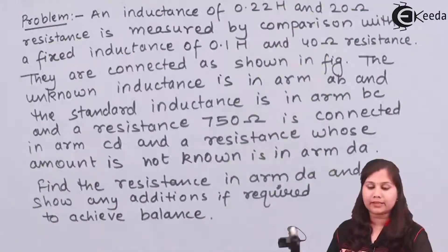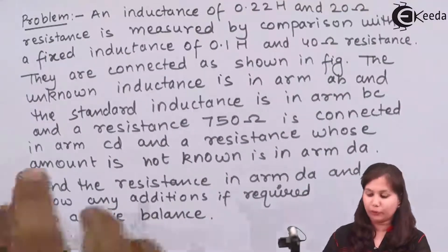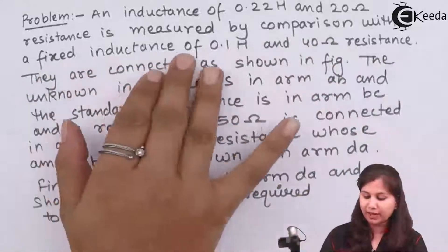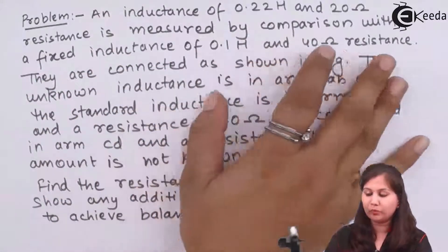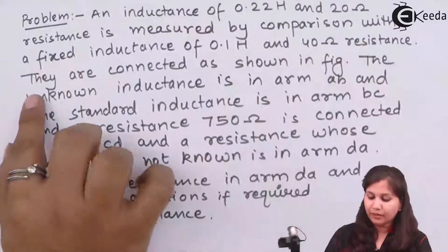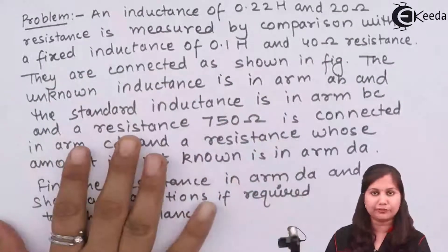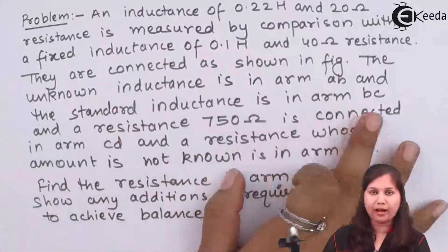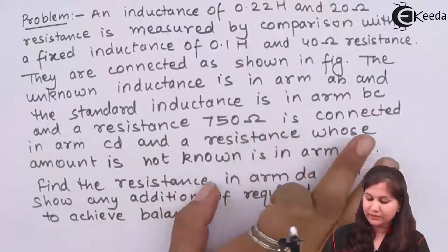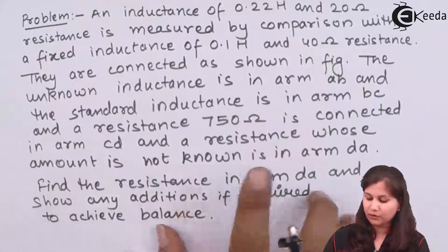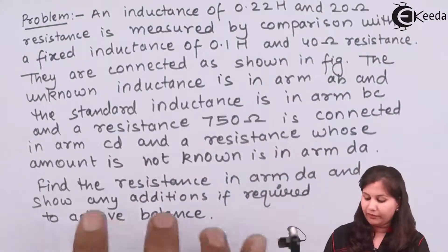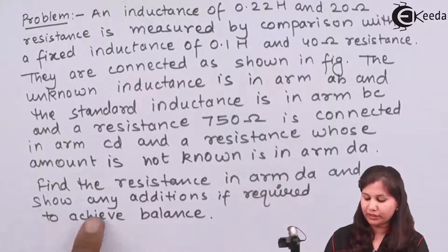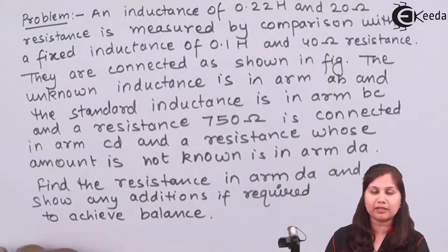Our problem is: we are given an inductance of 0.2 Henry and 20 Ohm resistance, which is measured by comparison with a fixed inductance of 0.1 Henry and 40 Ohm resistance. Now they are connected as shown in the figure. The unknown inductance is in Arm AB, the standard inductance is in Arm BC, a resistance of 750 Ohm is connected in Arm CD, and a resistance whose value is not known is in Arm DA. We have to find out the value of the resistance in Arm DA and show what additions are required to achieve balance for the bridge.